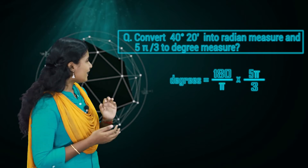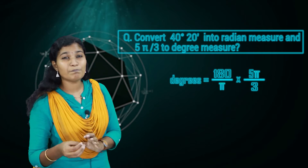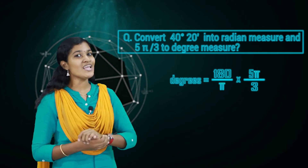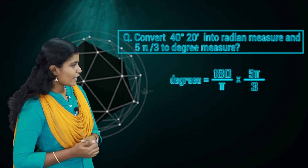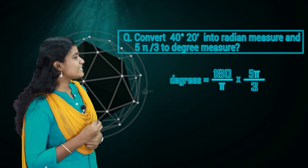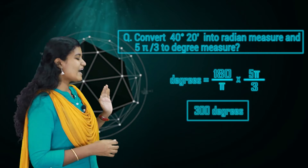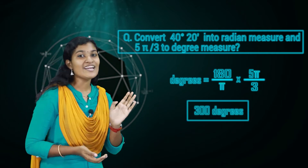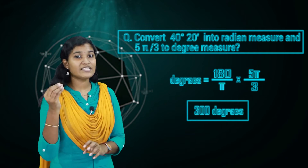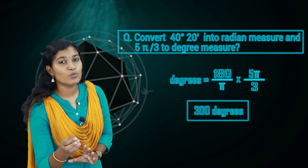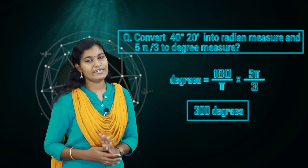For 5π/3 radian to degrees: degree measure = (180/π) × (5π/3) = 180 × 5/3 = 300 degrees. So 5π/3 radian equals 300 degrees. It is a very simple direct conversion of degree measure to radian measure and radian measure to degree measure.